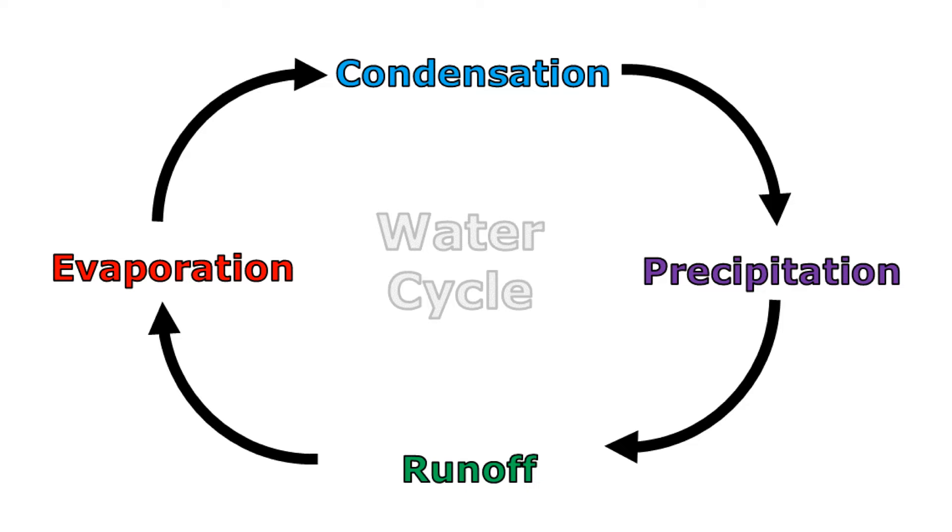This diagram summarizes the water cycle, but one important part of the water cycle that's not shown in this diagram is the sun. It takes energy to evaporate water, and the sun provides that energy and keeps the water cycle going.